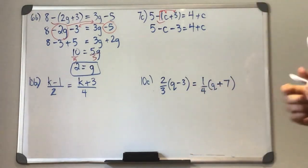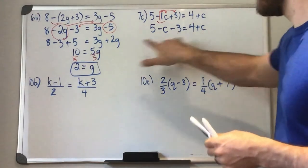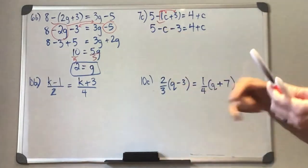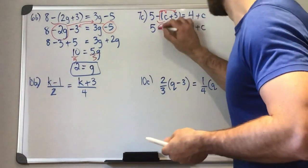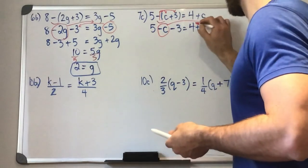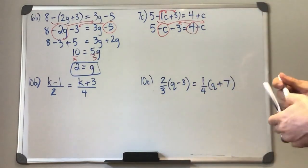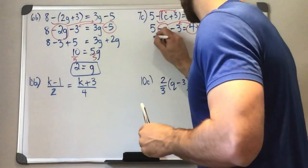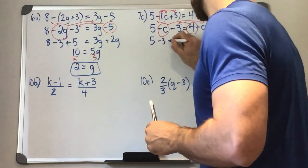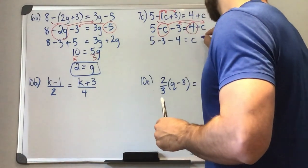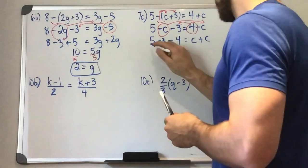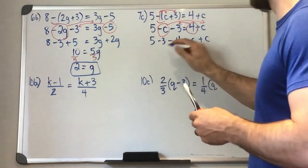Okay. So we have 5 minus C minus 3 equals 4 plus C. This one's similar to the last one. I have two constant terms on the left side already. I'd rather move this negative term over and this positive term over. So we have 5 minus 3 minus 4 is C plus C. So we have 5 minus 3 is 2. 2 minus 4.